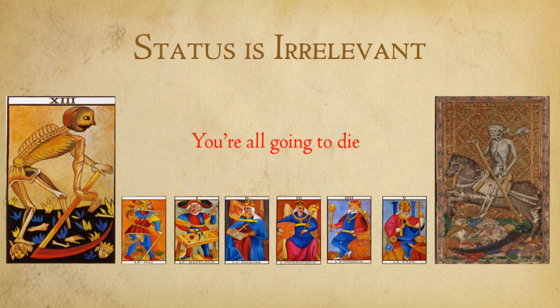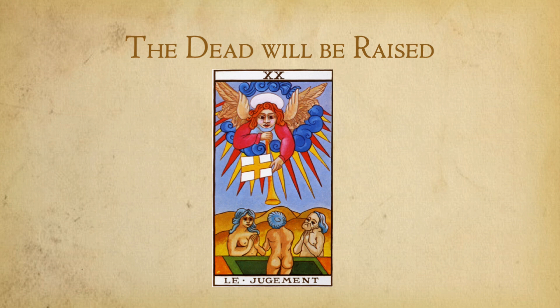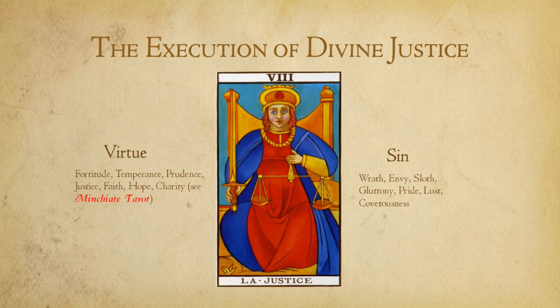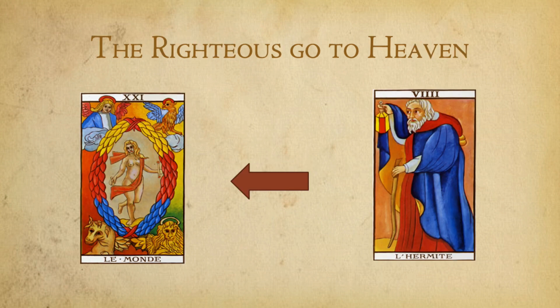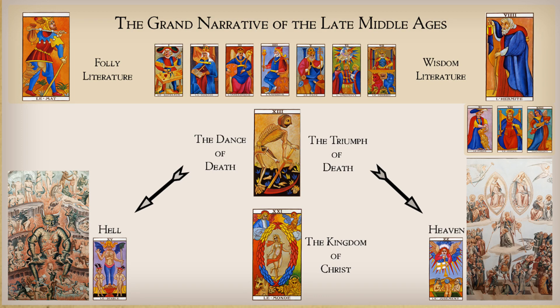Now let us look at the tarot. You're all going to die. The dead will be raised. Divine justice — the separation of sheep from goats. Note that in many older packs this card was placed towards the end of the trumps next to judgement. The foolish go to hell. The righteous go to heaven.